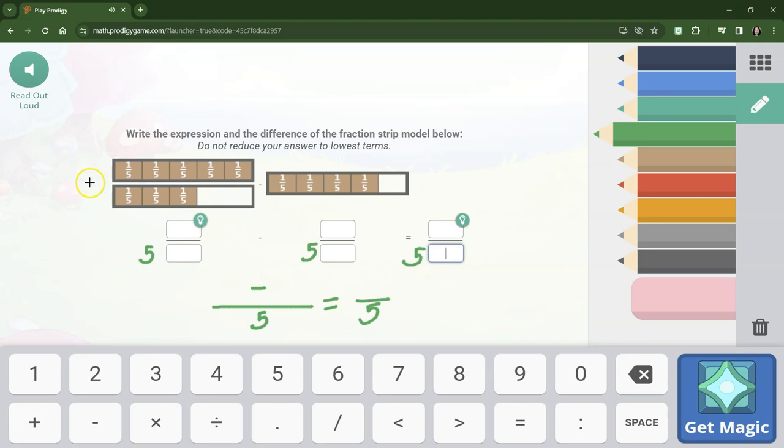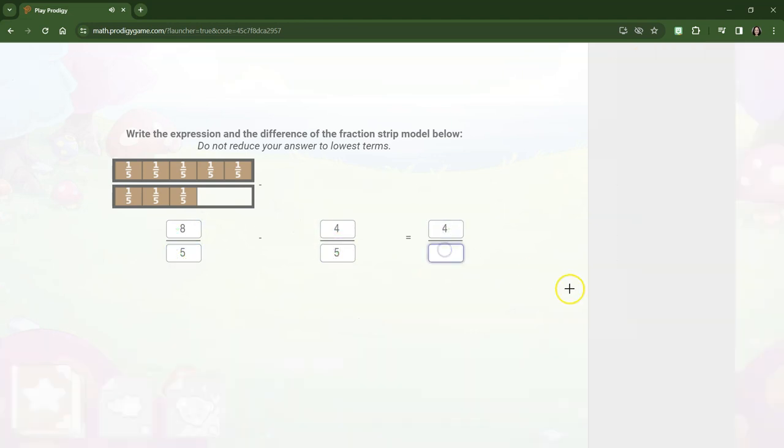In this case, I see that I have 8 fifths. And over here, I see that I have 4 fifths. So because all of my denominators are 5, I just need to do 8 minus 4. And now I can type all these things in and get my answer.